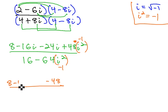So the numerator now, 8 minus 16i minus 24i minus 48. In the denominator, negative 64 times negative 1 is positive 64, and so we really have 16 plus 64.